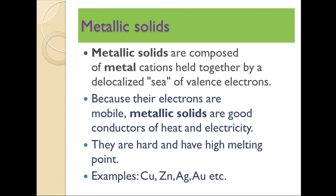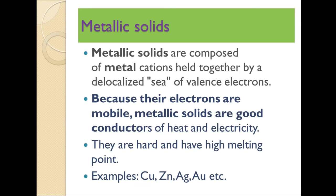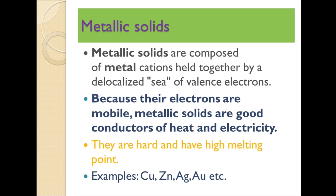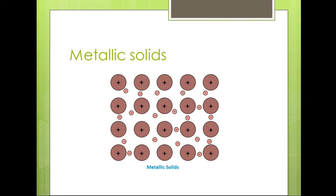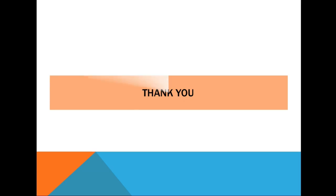Next, metallic solids. Metallic solids are composed of metal cations held together by delocalization of valence electrons. The cations are in fixed positions while the electrons are free to move. Metallic solids are good conductors of heat and electricity, and are hard with high melting points. Examples include copper, zinc, and gold. The attractive force between cations and free electrons is called metallic bonding.